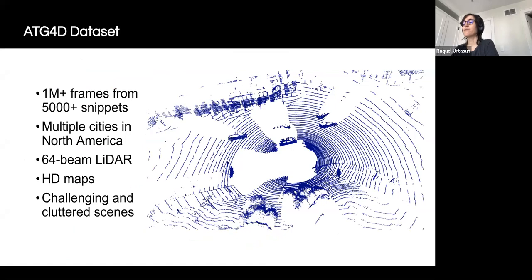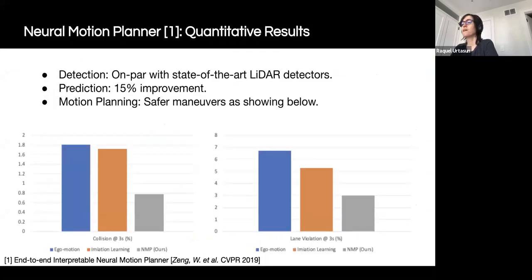We evaluate our approach on our challenging ATG4D dataset. This dataset contains over a million frames from more than 5,000 snippets collected from multiple cities across North America. It provides raw point clouds from a 64-beam lidar sensor and high definition maps. It contains very challenging urban scenes with many actors, making it interesting for interactions. Here we show our results. Compared to the state of the art, our model achieves on par or better detection and prediction performance at the time of publication of the paper. More importantly, as we can see in the figure, our planning results have a much lower collision and lane violation rate, which indicates safer planning.